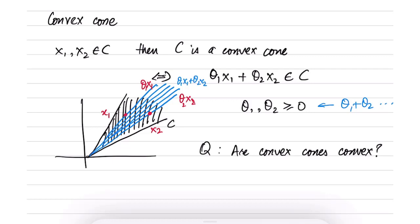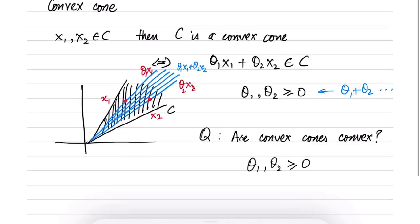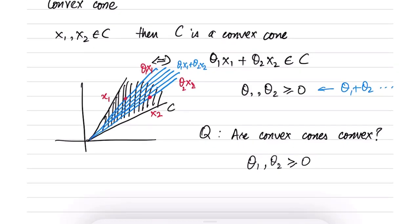But you can see it by considering the fact that convex cones allow θ1 and θ2 to be arbitrary numbers that are greater than or equal to 0. So naturally, a choice of θ1 and θ2 such that they both sum up to 1 is also covered. In other words, if you can guarantee that this holds for θ1 and θ2 greater than or equal to 0, then it obviously holds when θ1 plus θ2 add up to 1.